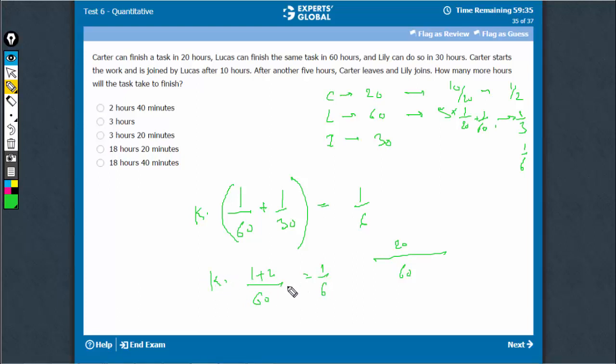So 2 into 3 upon 60 would be, I'm sorry, that's not correct. k into 1 upon 20 is 1 upon 6. So k is equal to 60 upon 18 or 20 upon 6. That is 3 hours, 0.33 hours means 20 minutes. 3 hours 20 minutes, that's the right answer.